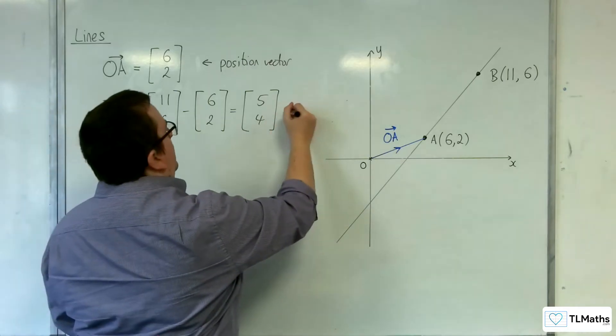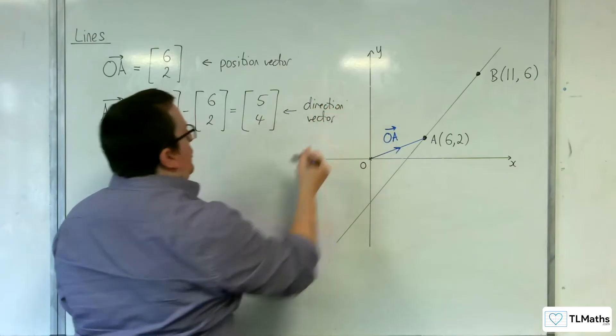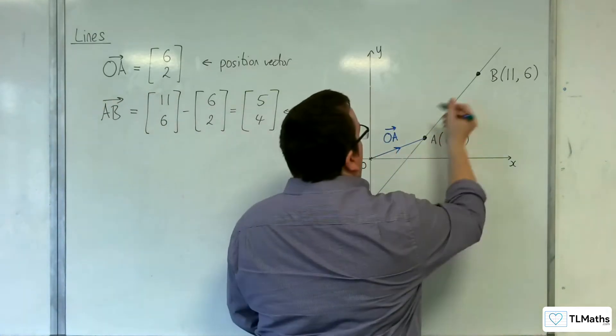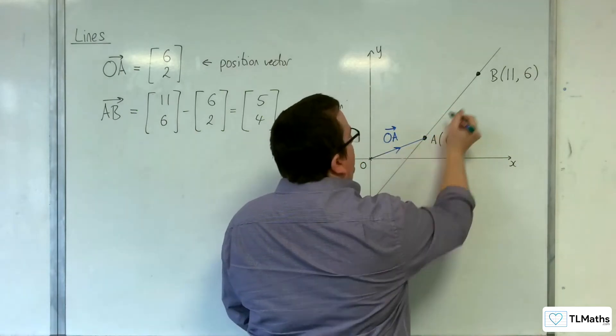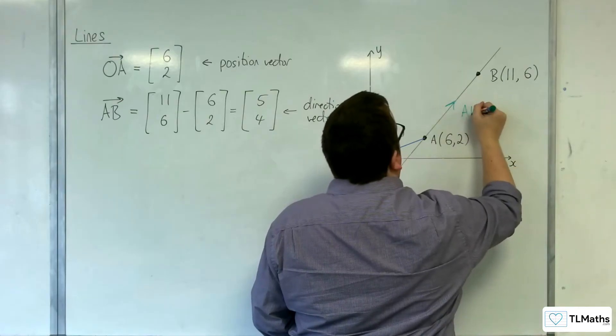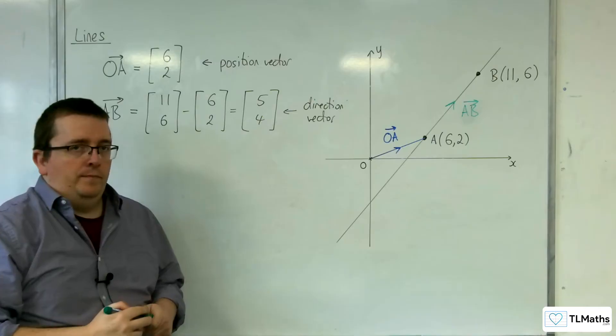So this is referred to as the direction vector. You've got a position vector that gets you onto the line, and then you've got a direction vector AB, which allows you to travel up and down the line.